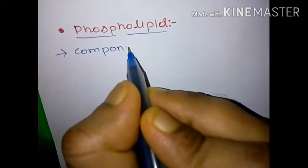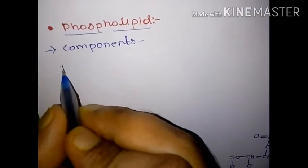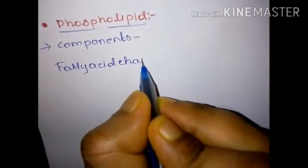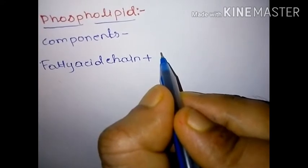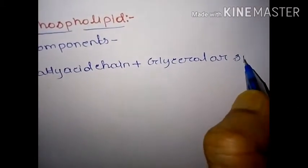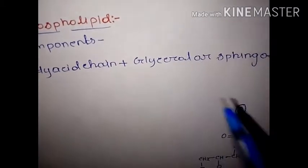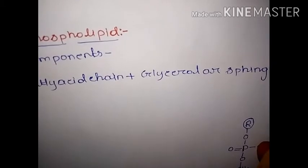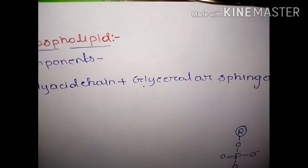The first component of phospholipid is the fatty acid chain. With the fatty acid chain there is glycerol or sphingosine attached. There are two types of phospholipids: one is glycerol-based phospholipid and another is sphingosine-based phospholipid. Glycerol and sphingosine are both alcohols.